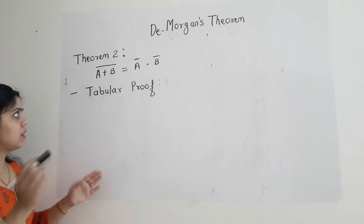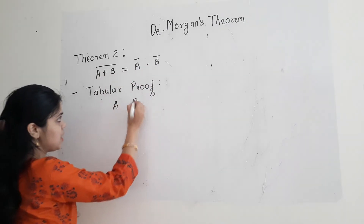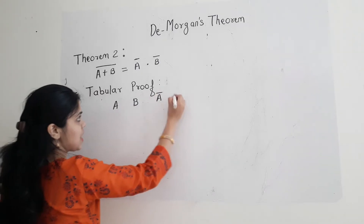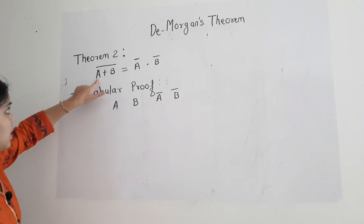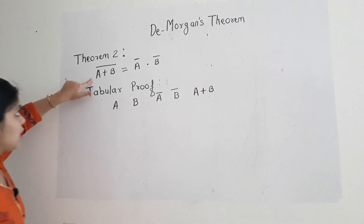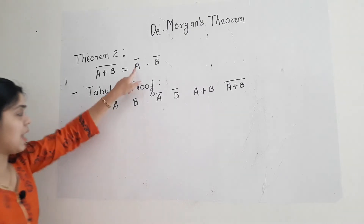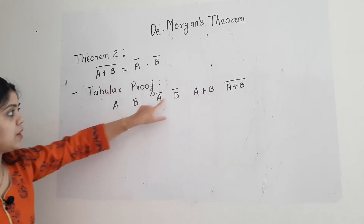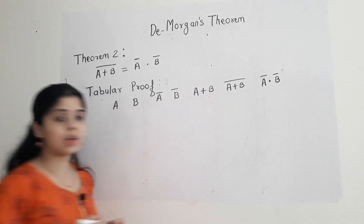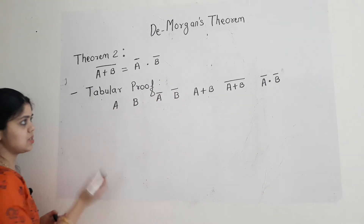Next is the tabular proof for the second theorem. There are two inputs A and B, so the first columns are A and B. The next columns are the individual complements A-bar and B-bar. Then I take a column for A plus B — the OR of both inputs — followed by a column for A plus B whole bar — the complement of that sum. The last column is the multiplication of the individual complements, A-bar dot B-bar. I need to show that the second-to-last column equals the last column.